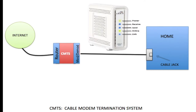So you contacted the cable internet provider for your area and they told you which DOCSIS modem to buy, and you went out to your favorite tech store and picked one up. Now before connecting that modem, you need to call your cable provider again to register your new modem by giving them the modem's MAC address.